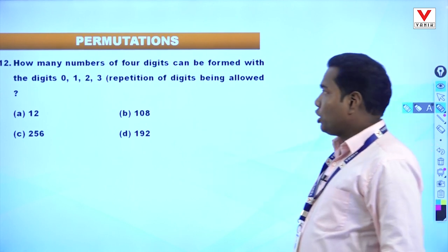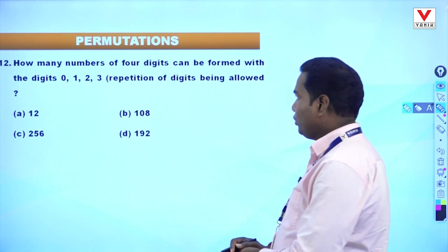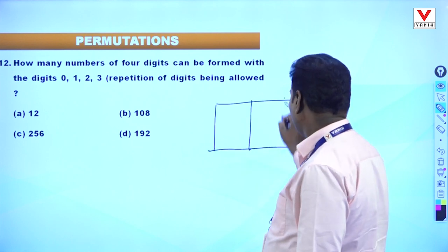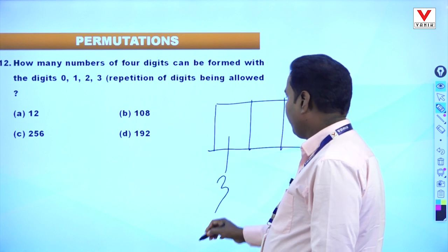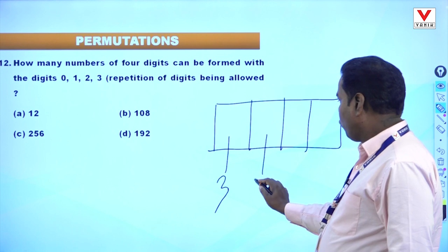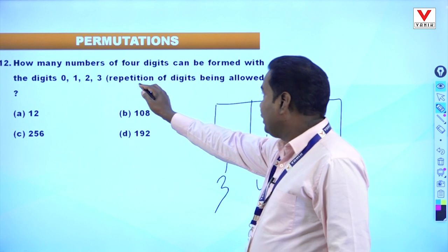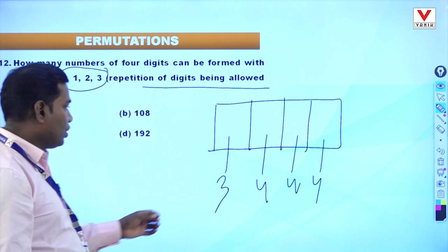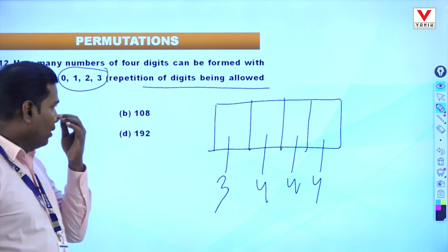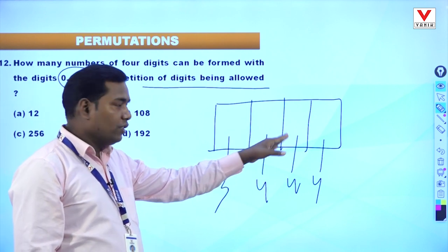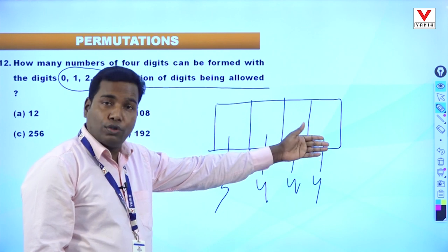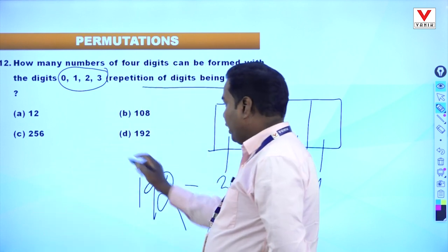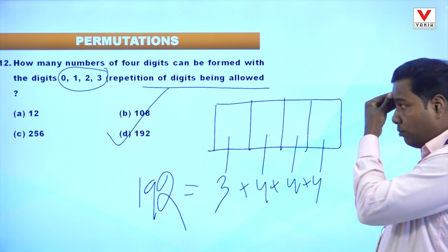Question 12: How many 4-digit numbers can be formed with digits 0, 1, 2, 3 when repetition is allowed? The thousands place cannot be 0, so 3 choices. The other three places each have 4 choices (repetition allowed). So: 3 into 4 into 4 into 4 = 3 into 64 = 192. Option D is correct.